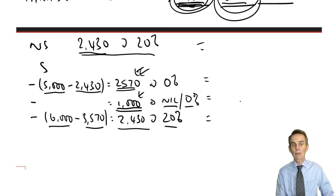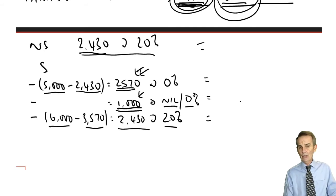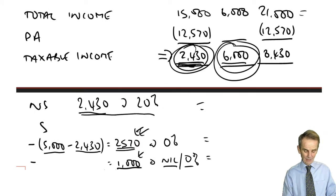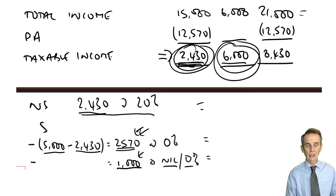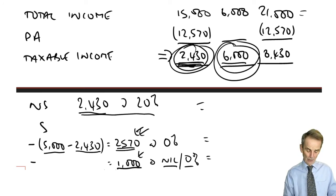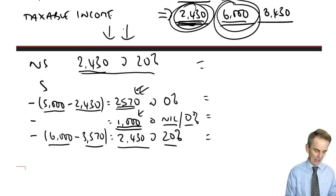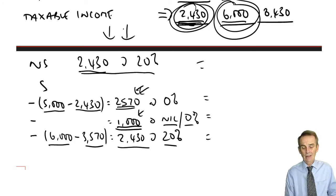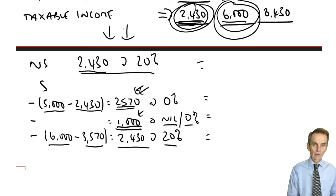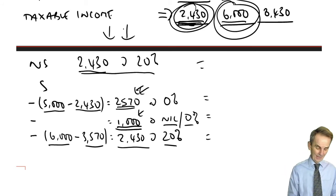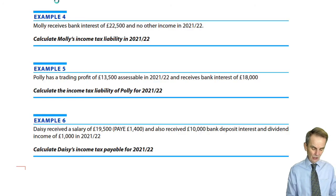That's definitely worth a couple of marks in a Section A objective testing question. Where they are objective testing questions, your presentation can be as scruffy as mine - you don't need all the detailed information. You need to know these numbers, but how you represent them is up to you - the examiner doesn't see your workings. What is important is that your workings provide you with accurate information for the tax calculation. In a Section C question, adhere to the format of the income tax computation shown to you.